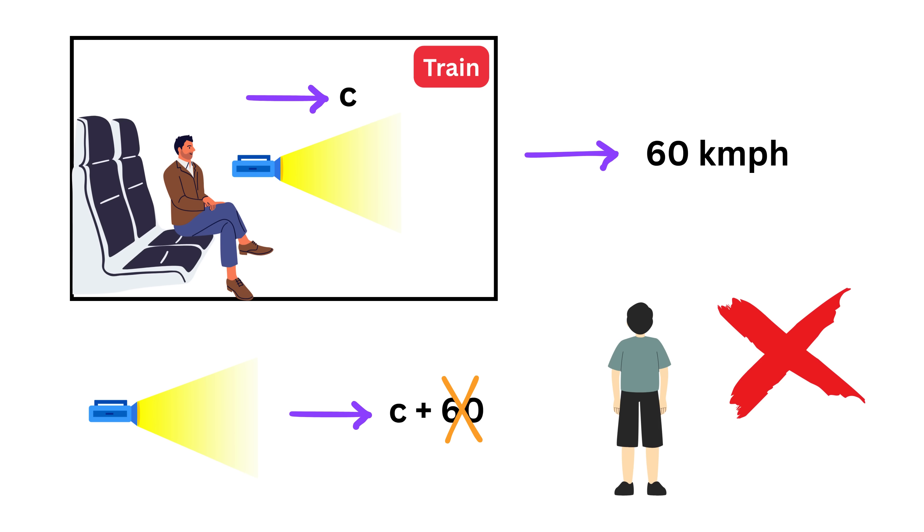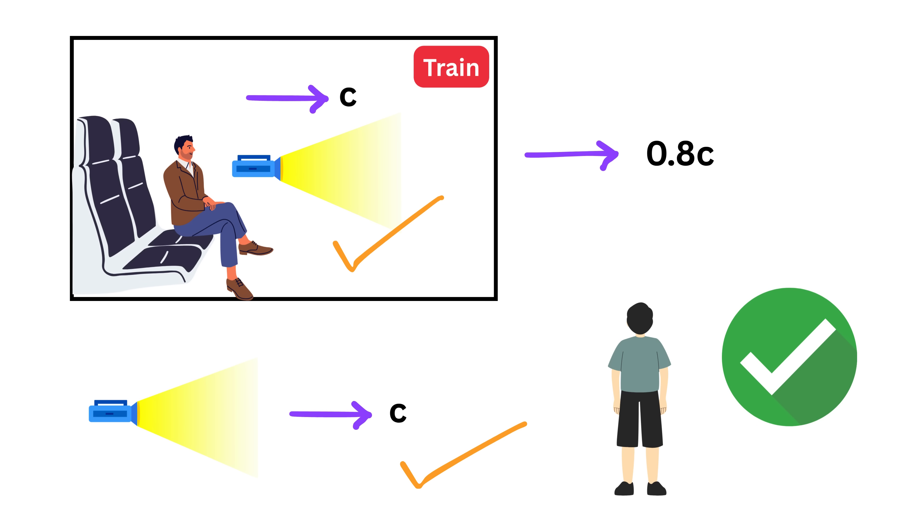The person outside does not see the light moving faster. They still measure the speed of the light as exactly three lakh kilometers per second, not a bit more. Even if the train were moving at thousands of kilometers per second, or even very close to the speed of light, the light beam from the torch would still travel at exactly c for both the person inside the train and the one outside. This was extremely confusing for scientists at the time because it did not fit with the classical idea of how motion and speeds should work. It meant that something very fundamental about our understanding of space, time, and motion had to change.